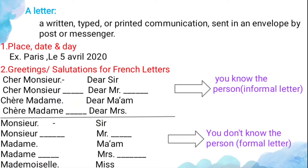A letter is defined as a written, typed, or printed communication sent in an envelope by post or messenger. There are some rules when writing a letter. The first rule is to write the place, date, and day — the place where you are writing from, and the date when you are writing the letter.